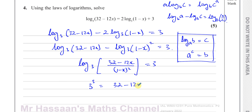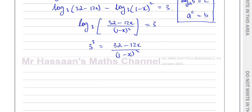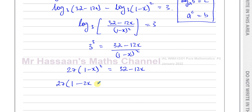So 32 minus 12x over 1 minus x squared equals 3 cubed. I've written this with no logarithms — in index form. This is an equation I need to solve for x. First, 3 cubed is 27, so 27 times 1 minus x squared equals 32 minus 12x. Cross-multiplying to get rid of the fraction, I can now expand that bracket. So I have 27 times 1 minus 2x plus x squared equals 32 minus 12x.